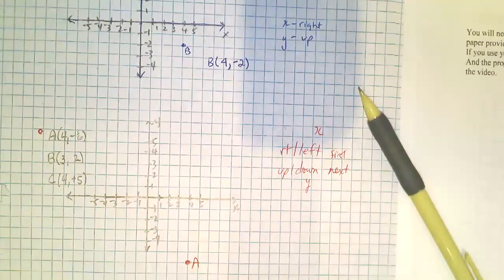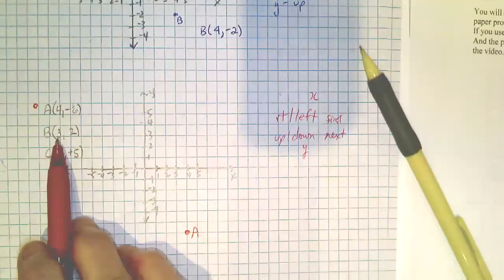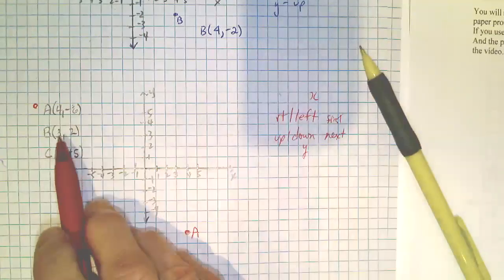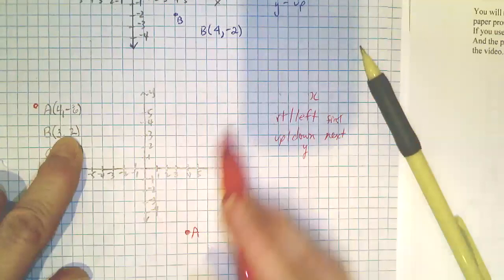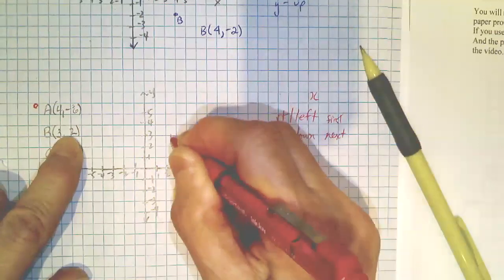Now you do point number two, the second point, which is three, two. Start at the origin, go to the right three, go up two. And that puts you here. That's B.